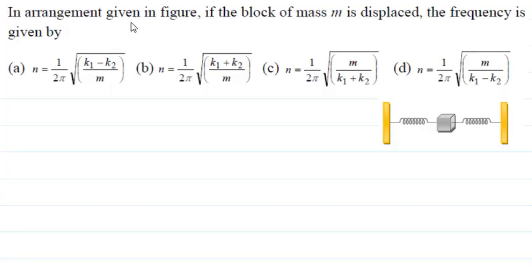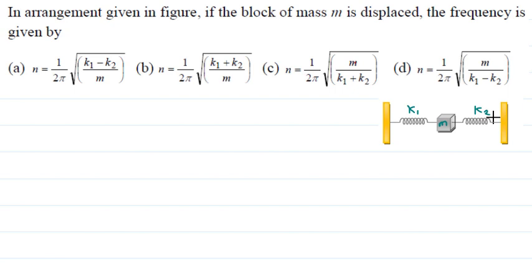Fourth question: in the arrangement given in figure, if the block of mass m is displaced, the frequency is given by? The block has mass small m; the first spring has force constant k1 and the second spring has force constant k2.